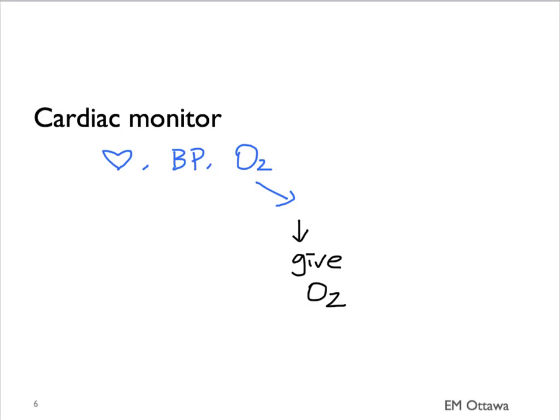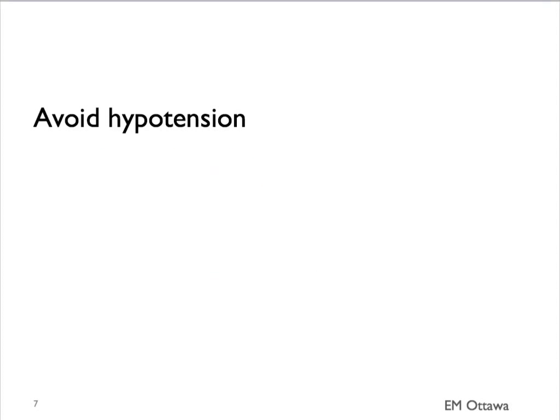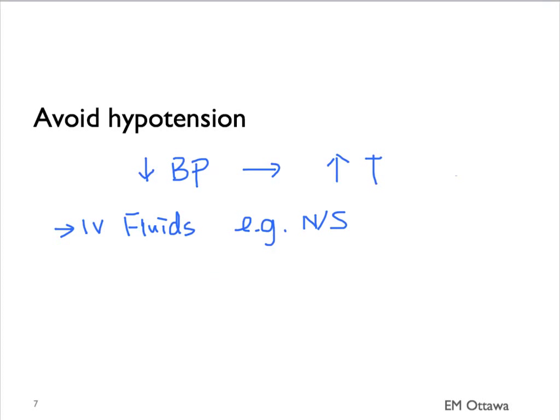Let's look at blood pressure management. For patients with intracranial bleed, it is important that we avoid hypotension. Hypotension can increase mortality in patients with intracranial bleed. We avoid hypotension by giving fluids such as normal saline. Sometimes vasopressors are used to avoid hypotension.